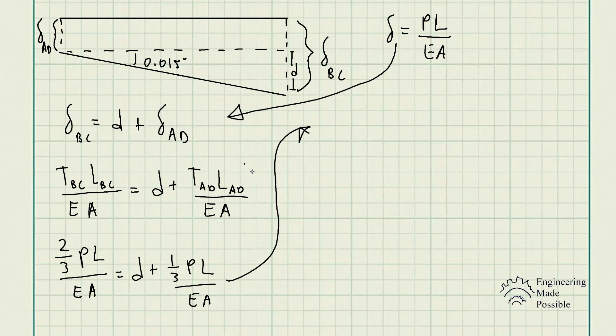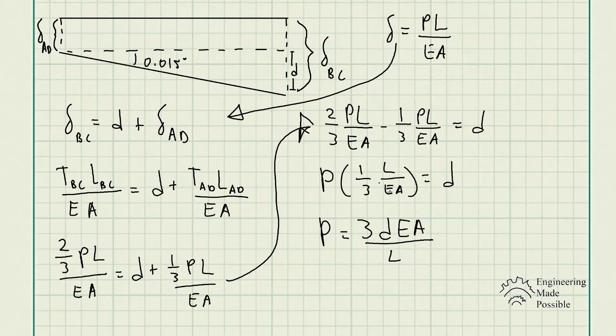After plugging in all of the values we previously solved for—the d in this case—we finally get that external load that would cause such a tilt of 0.015 degrees is equal to 6,470 pounds of force.